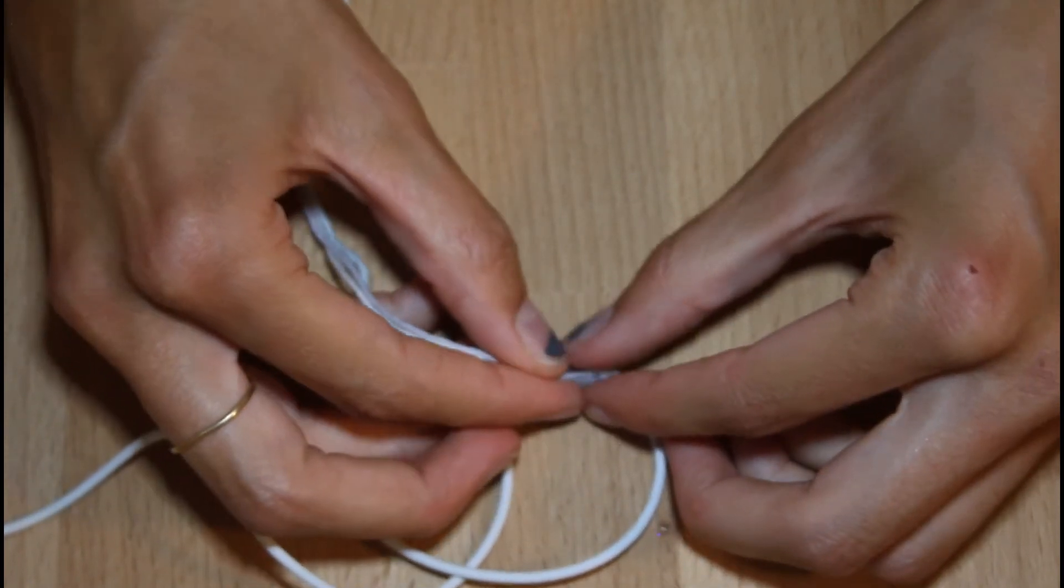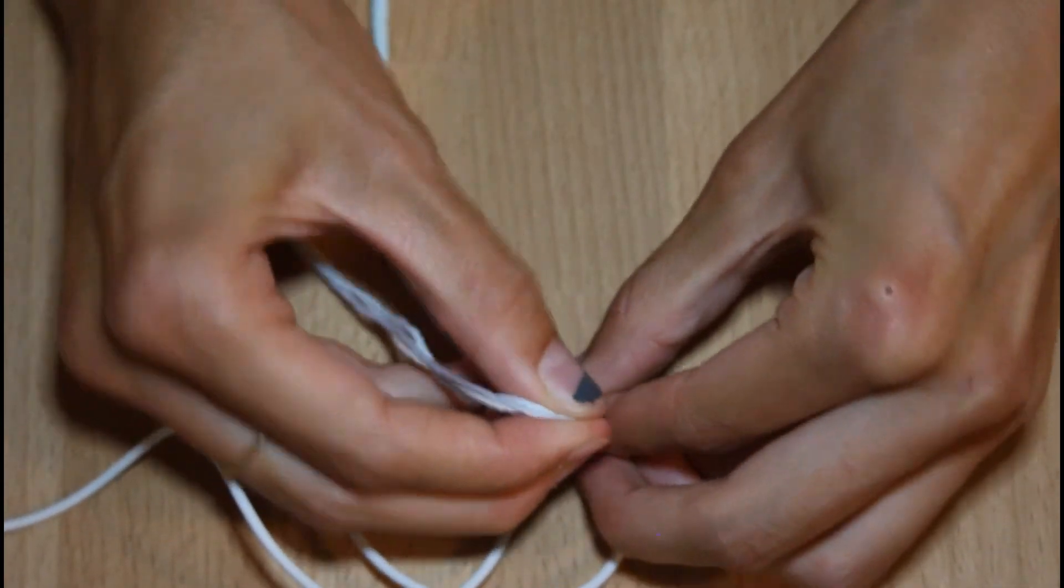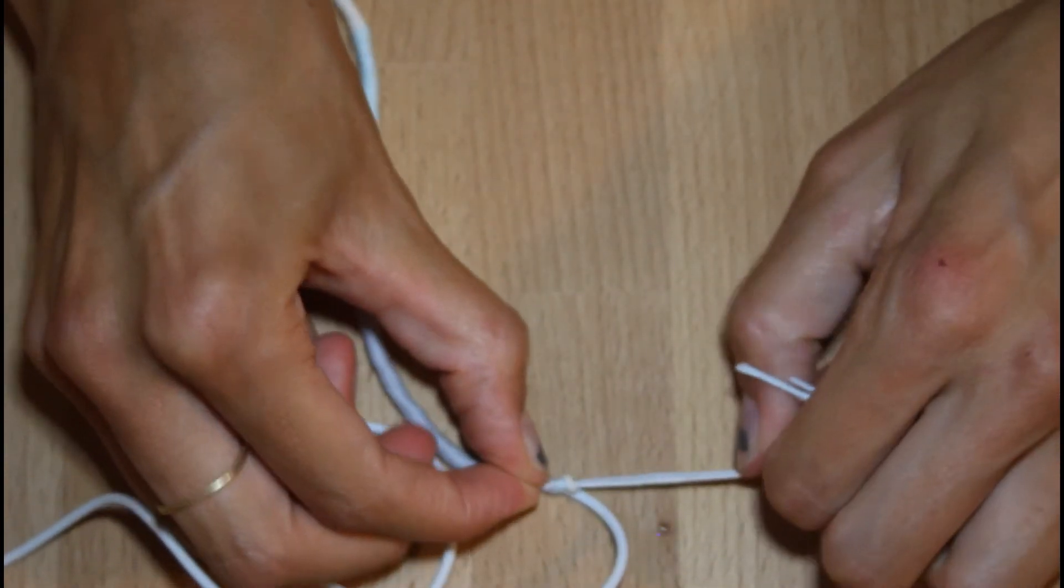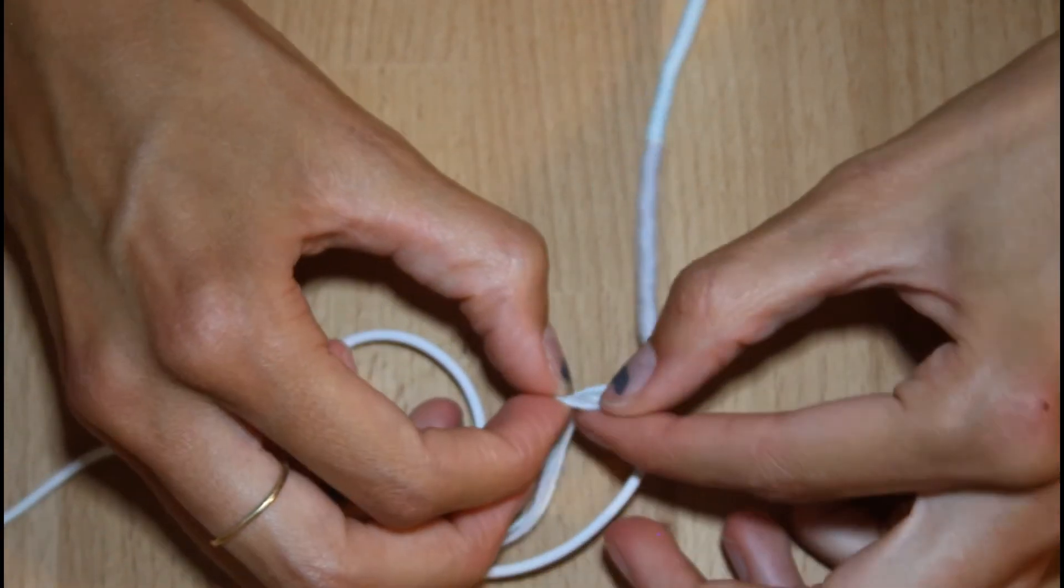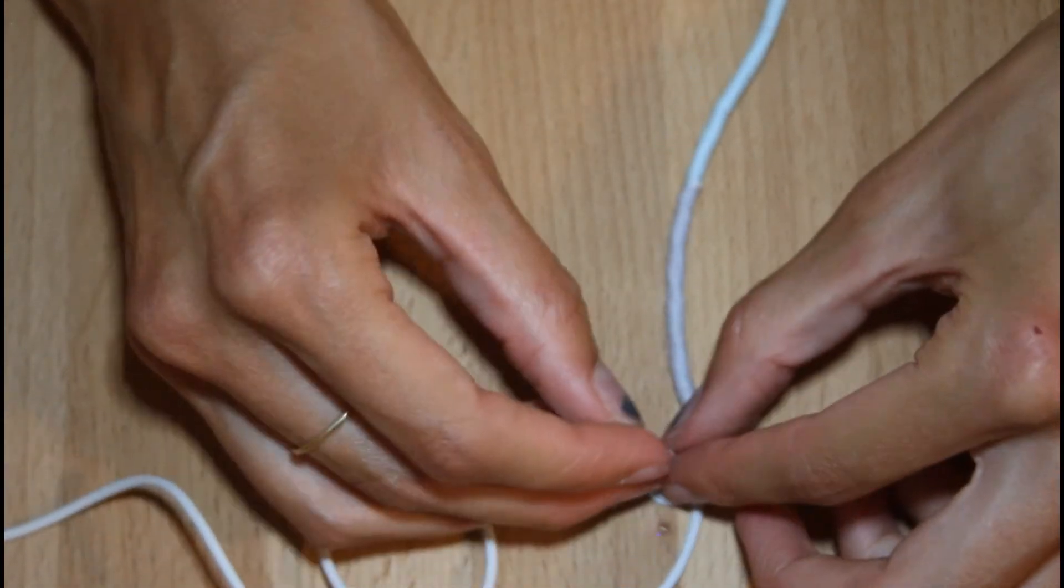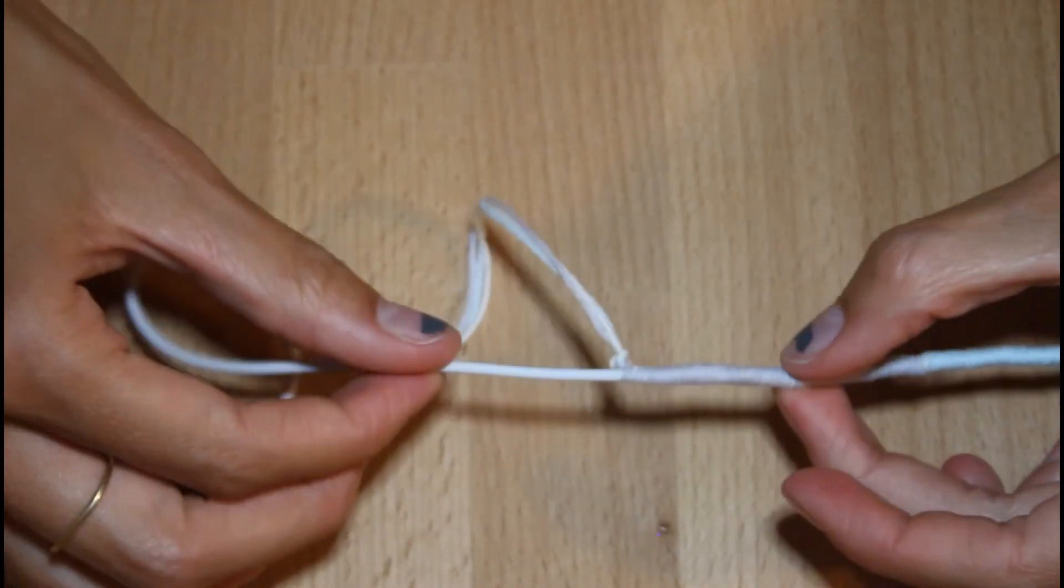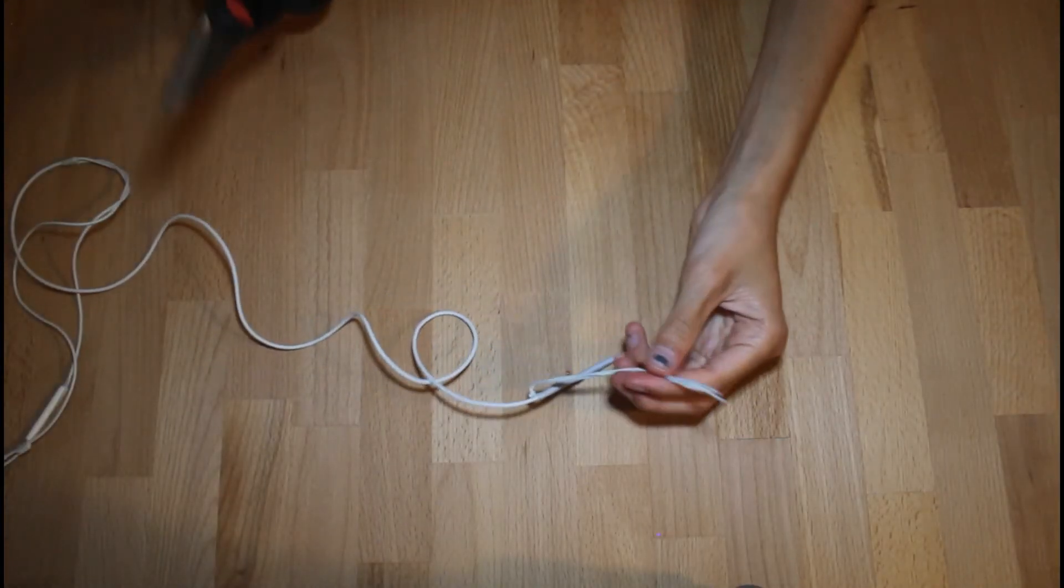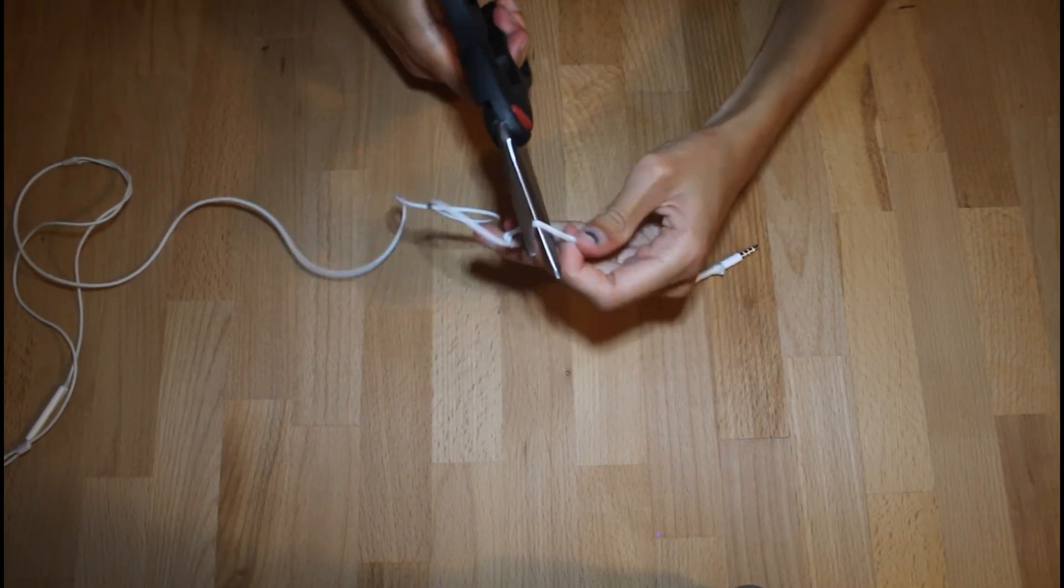Pull it nice and tight. Then you're going to do it again: wrap it around your finger, stick it through the hole, and then pull tight right around the base. There you have it, it's nice and secure. Last step, you are done. You just have to cut the tail off.